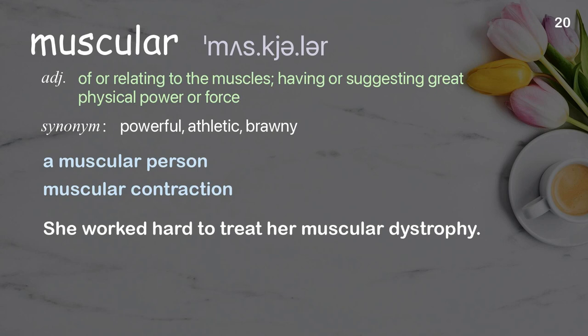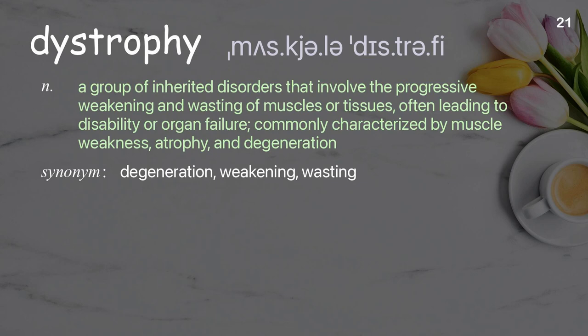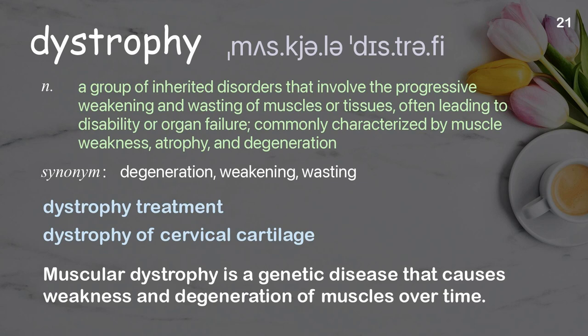Dystrophy: a group of inherited disorders that involve the progressive weakening and wasting of muscles or tissues, often leading to disability or organ failure, commonly characterized by muscle weakness, atrophy, and degeneration. Examples: dystrophy treatment, dystrophy of cervical cartilage. Muscular dystrophy is a genetic disease that causes weakness and degeneration of muscles over time.